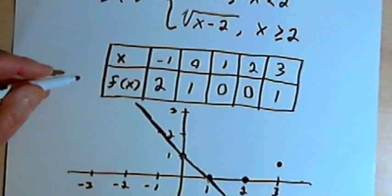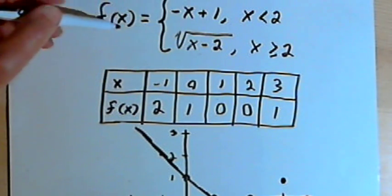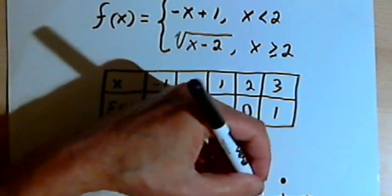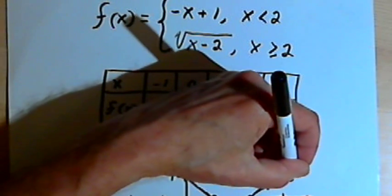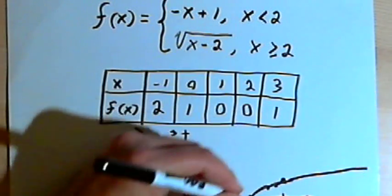Now that was part of that square root function, or the square root part of the function. So since the square root function is a curve that looks like this, I can just kind of continue that curve.